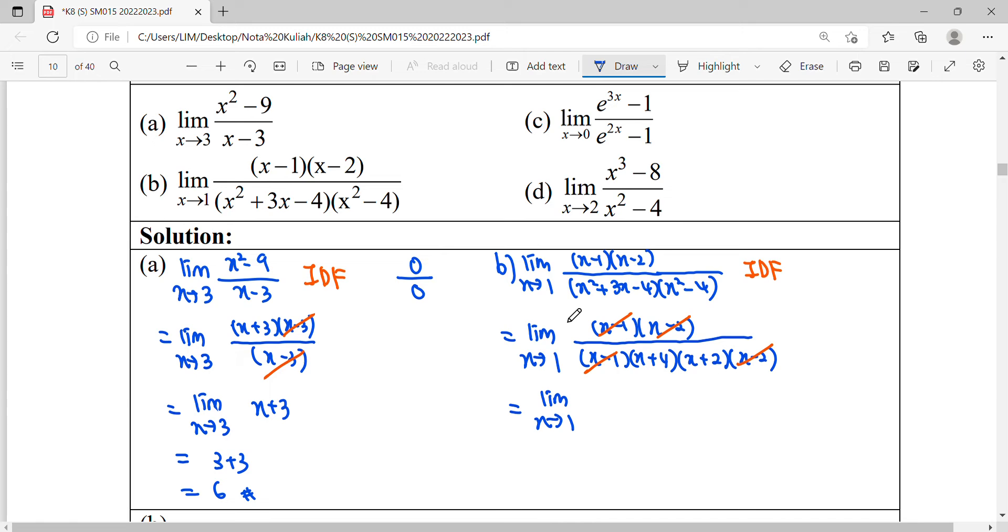What is the simplest form that we get here for our function? 1 over X plus 4, X plus 2. So now we can try to find out the coordinates. When we substitute the coordinate X is 1, it will be 1 plus 4, 1 plus 2. So our function is nearly to the value of 1 over 15.